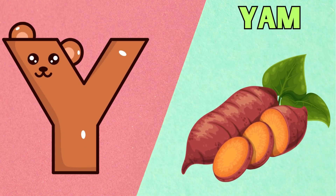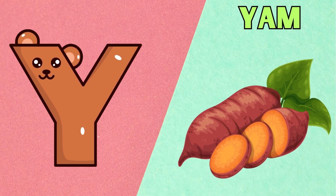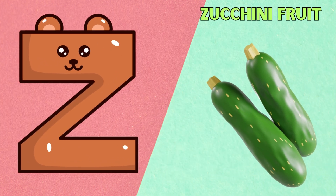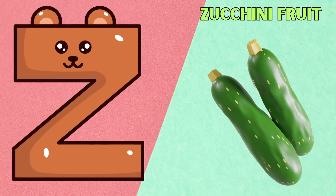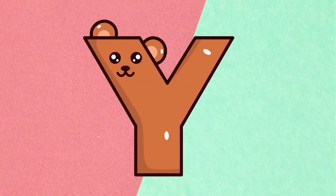Y is for Yam. Y, Y, Yam. Z is for Zucchini Fruit. Z, Z, Zucchini Fruit.